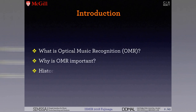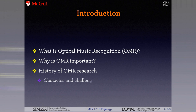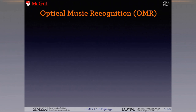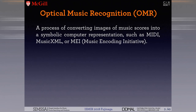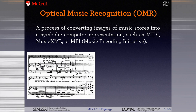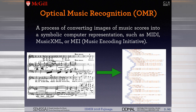So the general overview: what is optical music recognition, why is it important, and a brief history covering obstacles and challenges. Optical music recognition is the process of converting images of music scores into a symbolic computer representation such as MIDI, MusicXML, or MEI — Music Encoding Initiative — which I like to promote. Basically, an image bitmap gets converted to a file format the computer can read in symbolic format, and that process in between is called OMR.